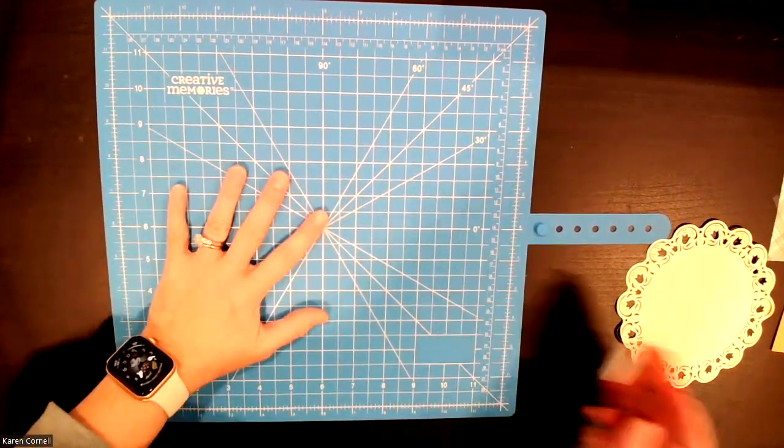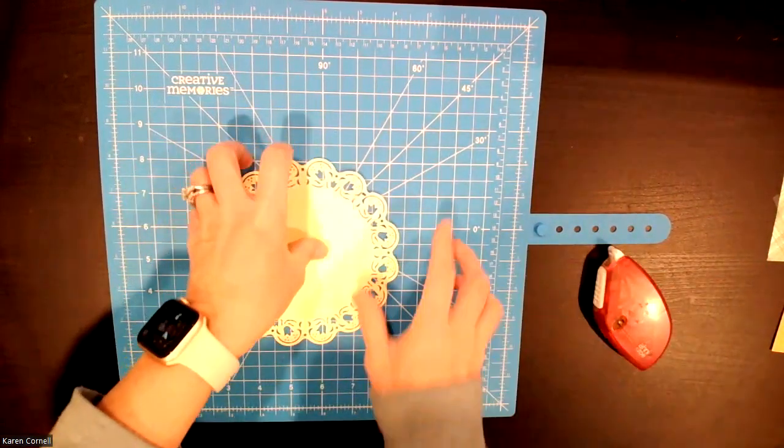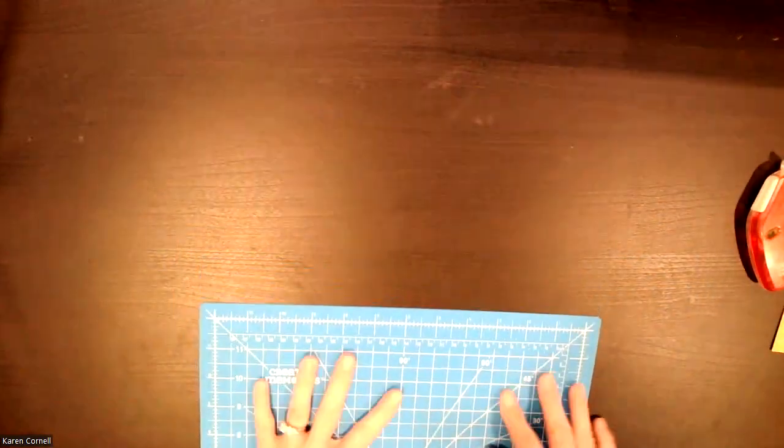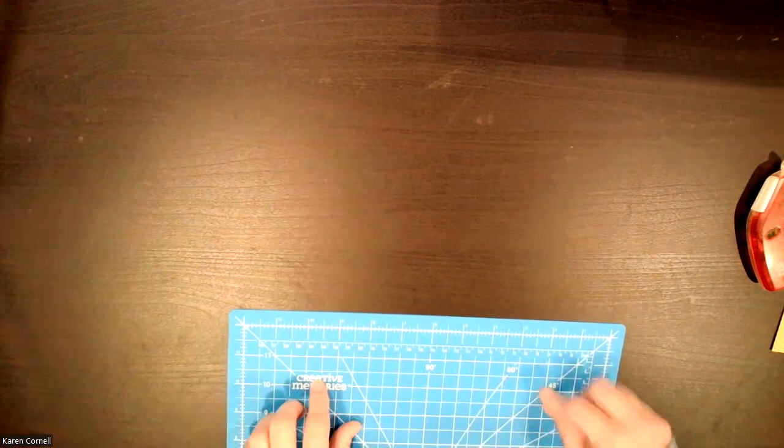The thing I love about this is it's bendable. So if I only have a little spot on my craft table, I can have it hang over on the side and just do a little runner, and then I just fold it and put it off to the side.